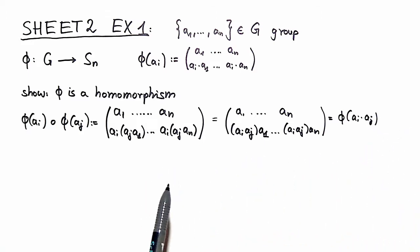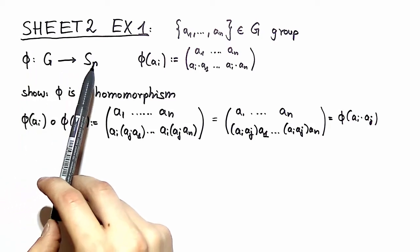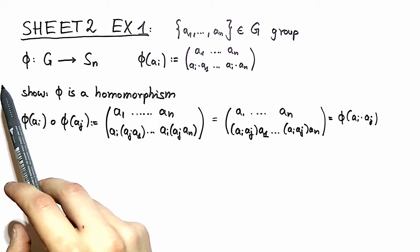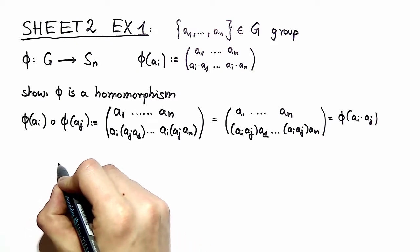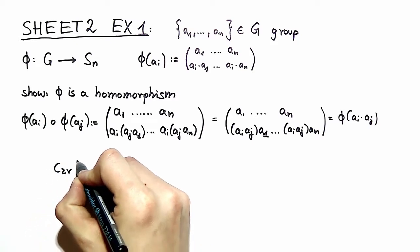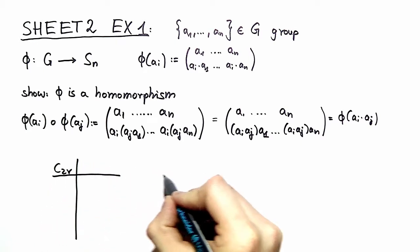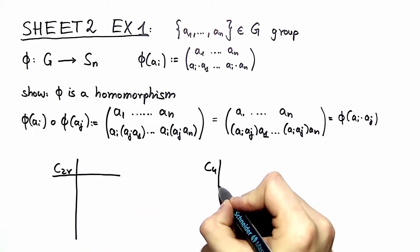This proves our theorem but it's very hard to imagine what does it mean to have a map that associates a permutation to every group element and therefore we are making here two examples. One example we are making with the group of C2v and the other example is the group of C4.